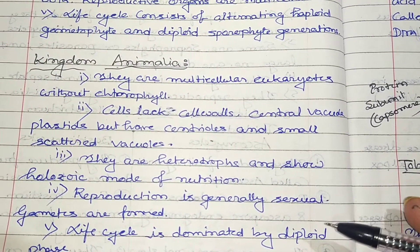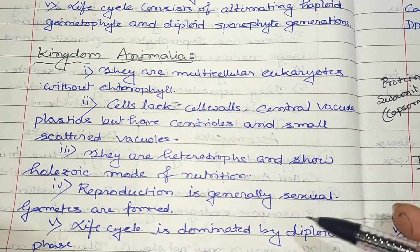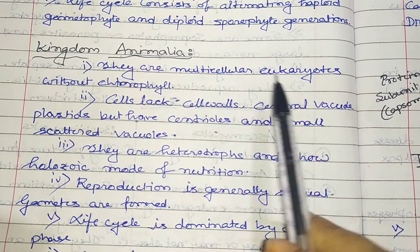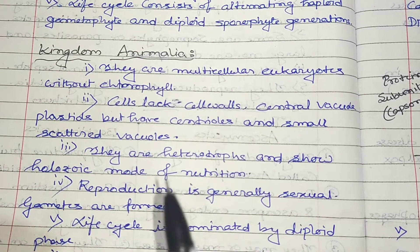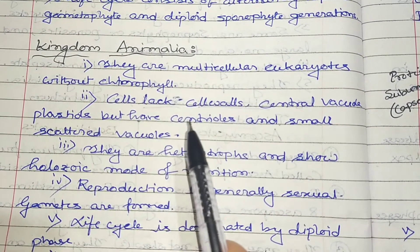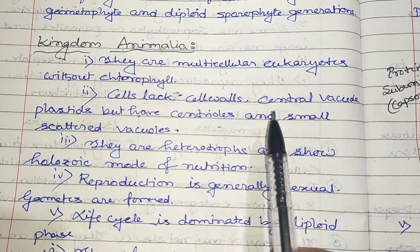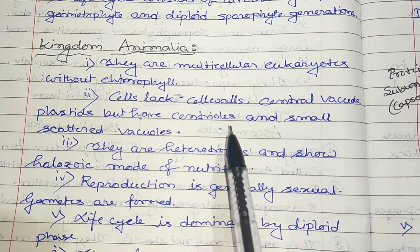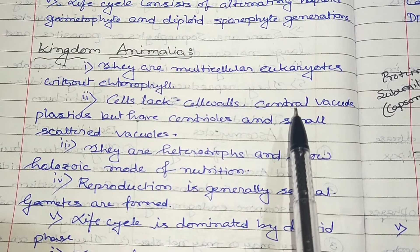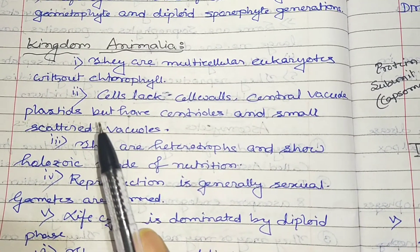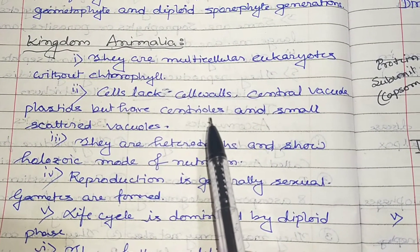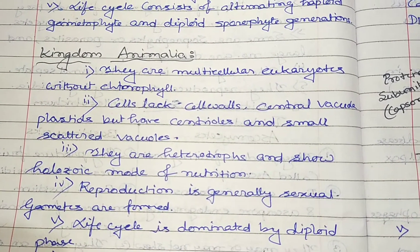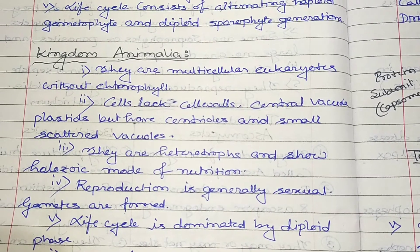Kingdom Animalia organisms are multicellular eukaryotes without chlorophyll. Their cells lack cell walls and a large central vacuole, though they do have centrioles. Instead of a large central vacuole, animal cells have small scattered vacuoles.